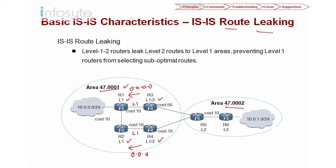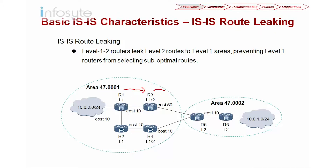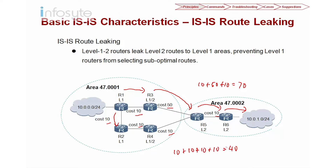R4 will inject a default route to R2. When R1 wants to go to a particular network it will look into its routing table and determine that the nearest gateway to go out to the 10.0 network is R3. So R1 will go through R3, then R5, R6, and finally to the 10 network. Looking at the cost: 10 plus 50 plus 10 gives a total of 70. But there is another option with a cost of 10 plus 10 plus 10 plus 10, which equals 40. So R1 is using a sub-optimum path to reach the 10 network.